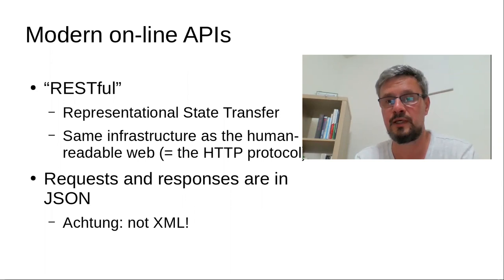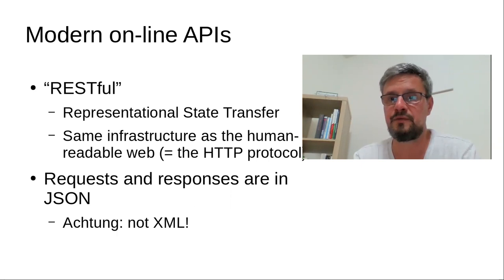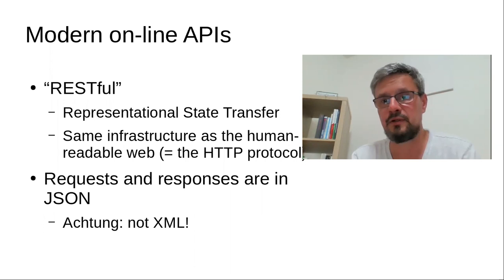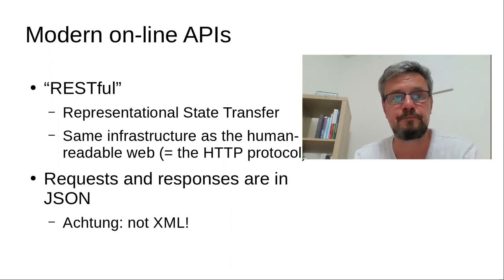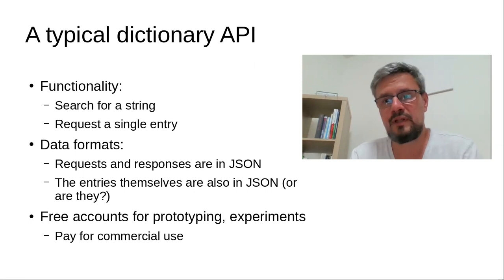This is another potential pressure point for dictionary publishers, because dictionary data usually lives in XML natively. So if you're thinking about making a dictionary API available, you need to ask yourself: am I going to make the data available in the XML I already have, or am I going to convert it into JSON? Later on I'm going to show you examples of how different APIs answer this question differently.